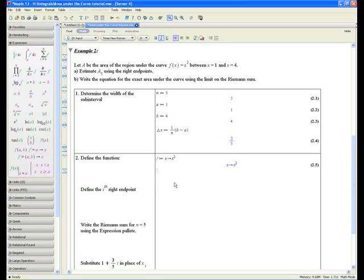And now, define the i'th right endpoint. x sub i is equal to a plus i times delta x. Now, you can quickly just copy and paste the delta x there. And hit enter. And that's exactly what it is. It begins at x equals 1 or a equals 1 plus 3 fifths times i.